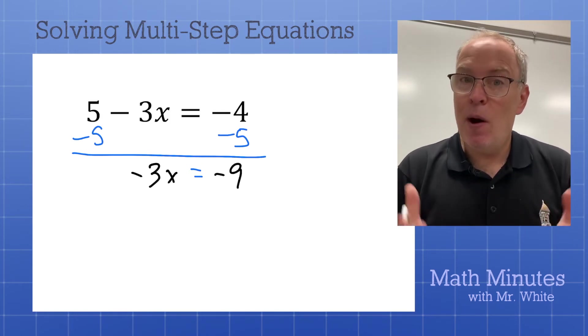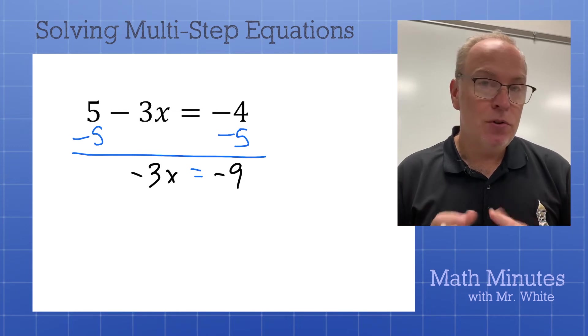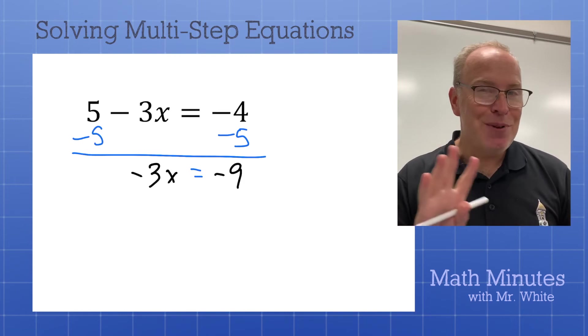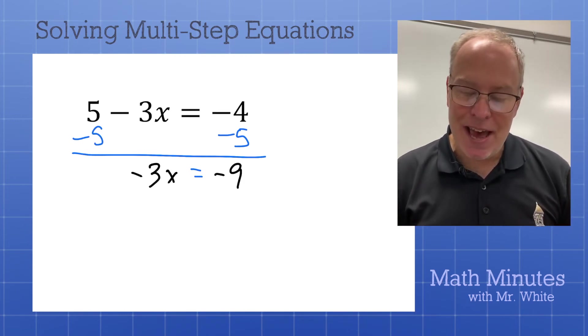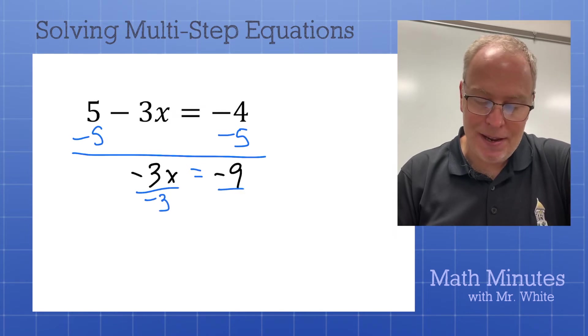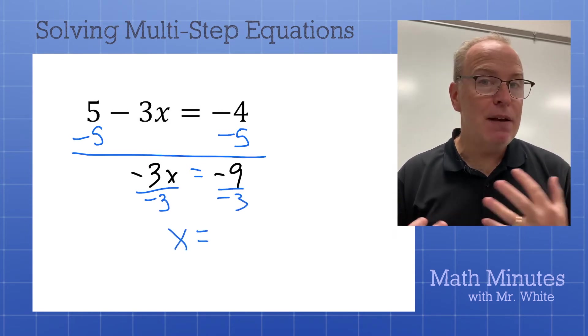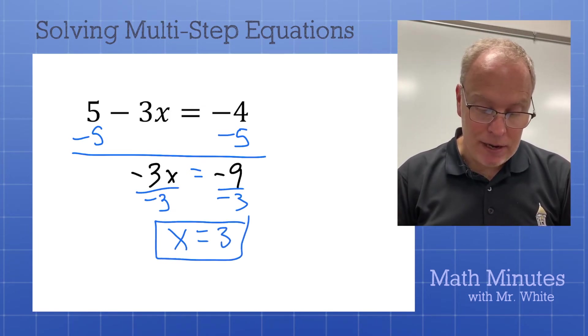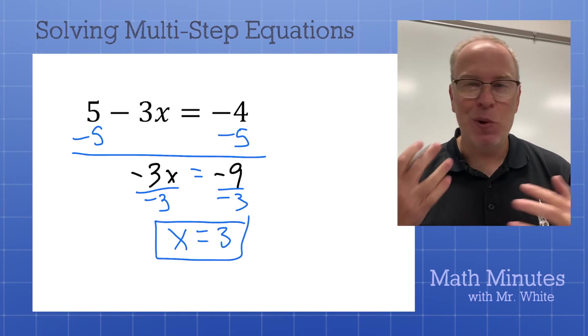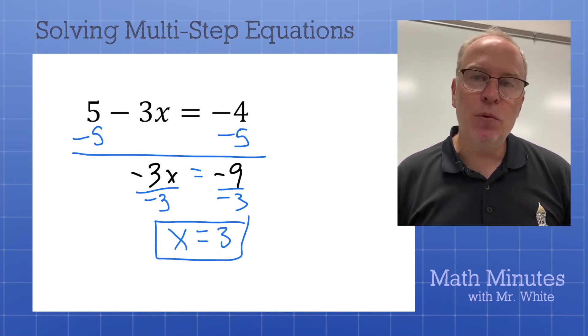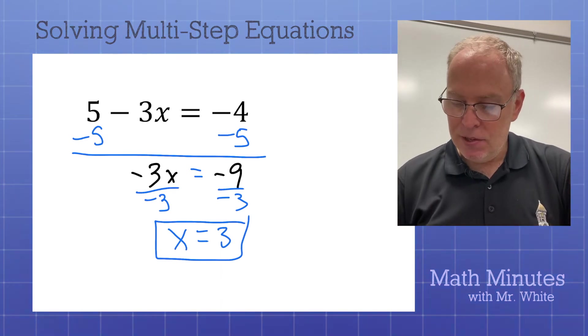Now, we're not done. We want to isolate x. So, don't stop there. We want to get rid of the negative 3. Don't say add 3. We're not going to add 3. How is it attached to the x? It's attached by multiplication, so we're going to divide by negative 3. Divide by negative 3. And a negative divided by a negative is a positive. I put a lot of negatives on these examples just so we could practice with those positives and negatives while we're at this. So, x equals positive 3 is the solution.